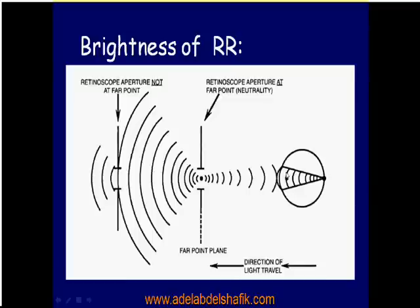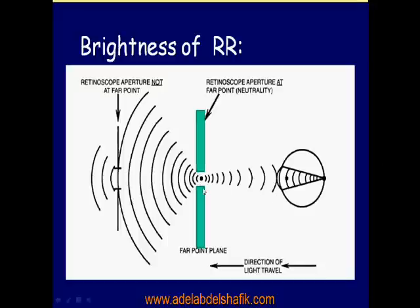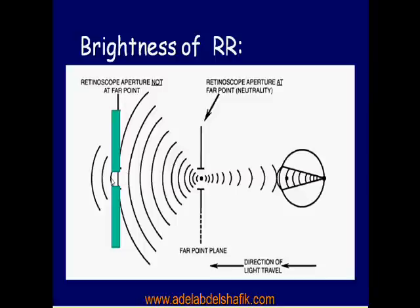To illustrate: if the observer's pupil is at the exact focal point, all rays are gathered and the red reflex is very bright. But if the observer is sitting far from the focal point, rays have diverged widely and only part of the bundle reaches the pupil, so the red reflex will be dim.